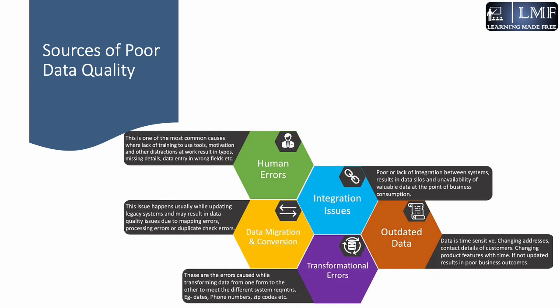Now, what are the sources of poor data quality? One of the sources is human errors — this is one of the most common causes. Lack of training, tools, motivation, or other distractions at work result in typos, missing details, or data entry into wrong fields. Human errors are one of the primary causes of poor data quality.